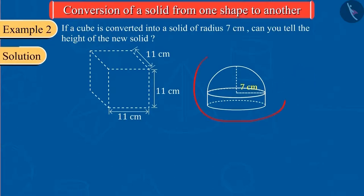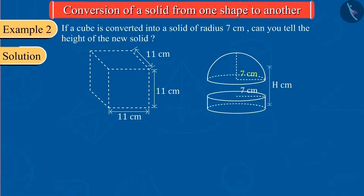Let the total height of this new solid made by Sanjana be capital H. From the picture, we can see that the new solid is made of a hemisphere and a cylinder. We can also see that the radii of these two solids are equal, that is, 7 cm.